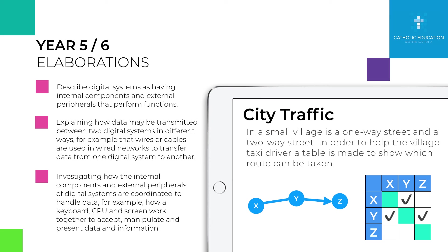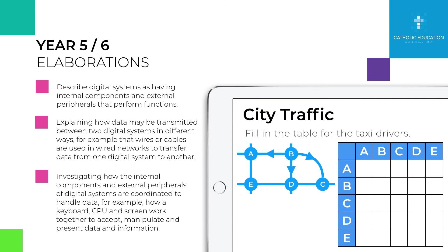We have a little problem where we have taxi drivers who need to follow a certain route. Sometimes they can go down a one-way street and sometimes a two-way street. We need to figure out how to get to each of the different parts. For example, X can go to Y and Y can go to X, and Y can go to Z, but Z cannot go back to Y. So we can figure out and work out our logic table. Looking at a more complex logic table, we can see that B can go to everything but everything can't go back to B — so we have some one-way streets. A can't go to B, but A can go to E, E can go to A, and so on. We can start to break down these problems and figure out where within our system each road can go.